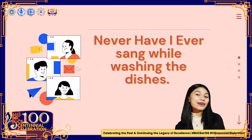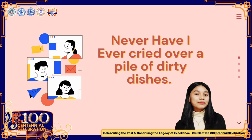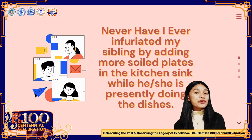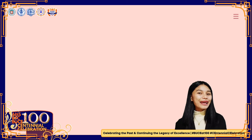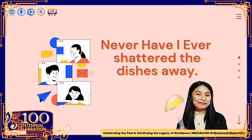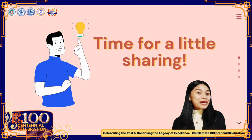Let's get started. First statement: Never Have I Ever Sung While Washing the Dishes. Next: Never Have I Ever Cried Over a Pile of Dirty Dishes. Next: Never Have I Ever Infuriated My Sibling by Adding More Soiled Plates in the Kitchen Sink While He or She Was Presently Doing the Dishes. Next: Never Have I Ever Volunteered in Washing the Dishes. And lastly: Never Have I Ever Shattered the Dishes. That ends our short icebreaker. Great job, class!